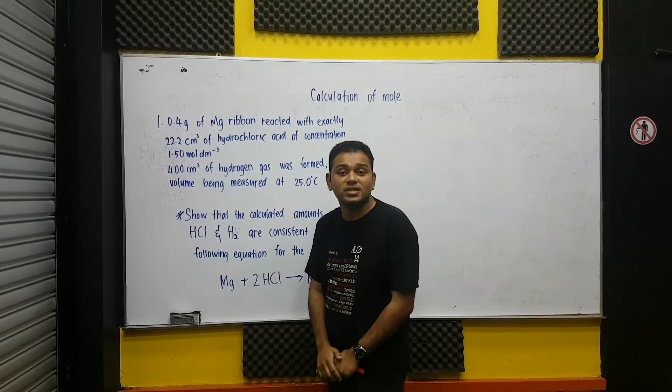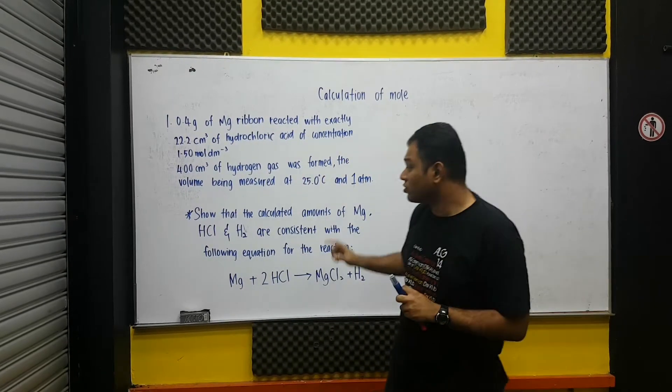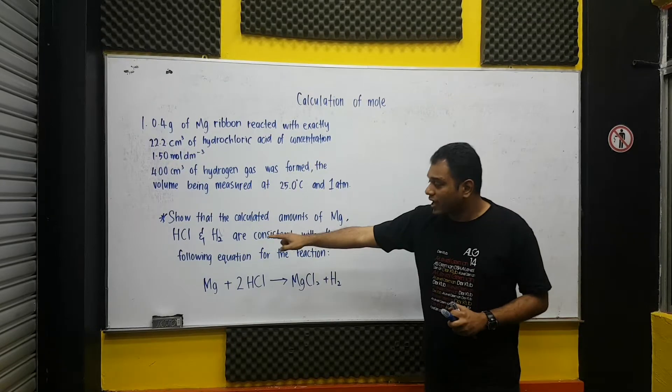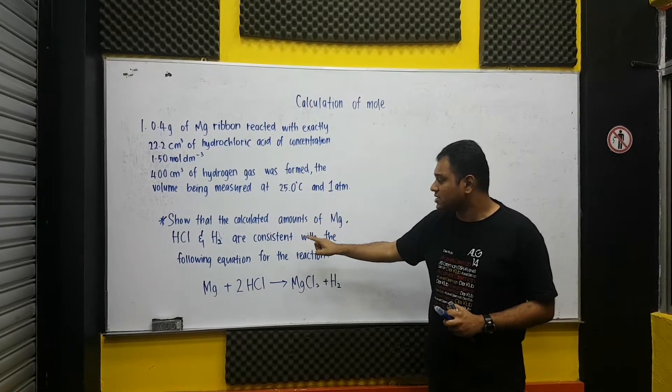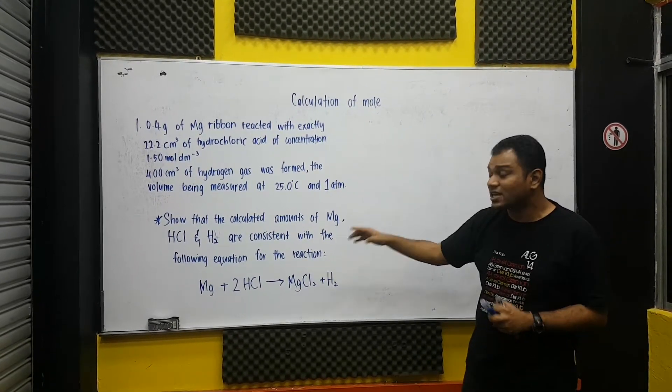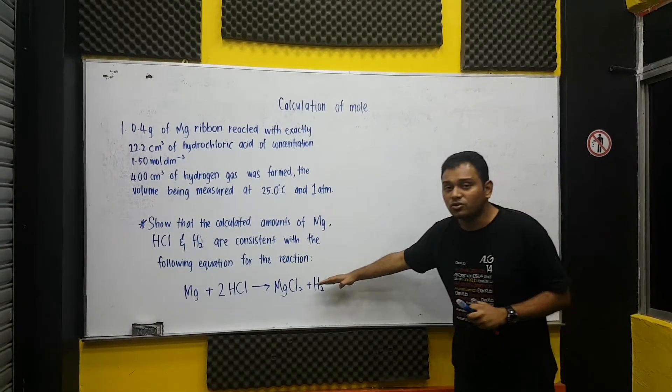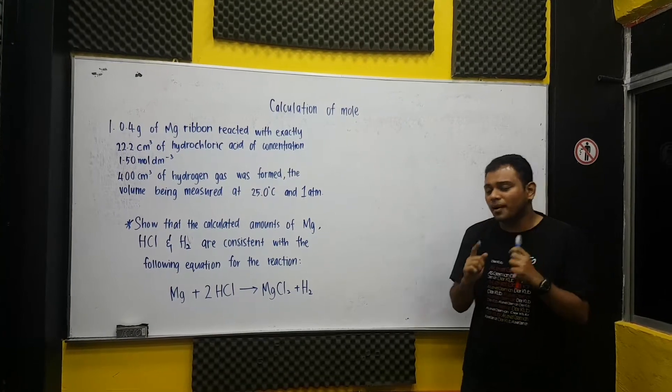So the question now will be, you need to show that the calculated amount of the magnesium, hydrochloric acid and the hydrogen gas are consistent with the following equation. Well, in this question, the balanced equation is given for you. So what is basically this question about?